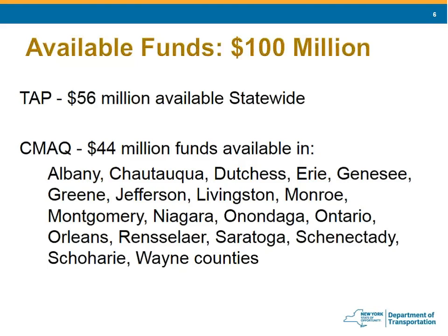To be eligible for CMAQ funding, the project must be located in one of the 19 listed counties. While other counties in the state are eligible to use CMAQ funding, counties such as New York, Nassau, Orange, Putnam, Rockland, Suffolk, and Westchester are covered under a separate process.